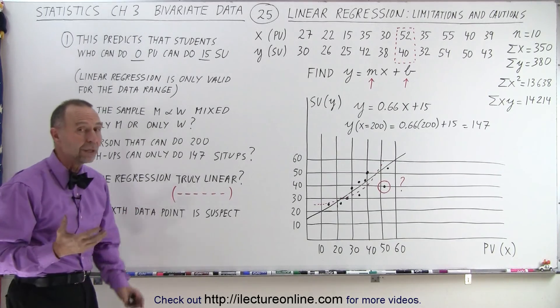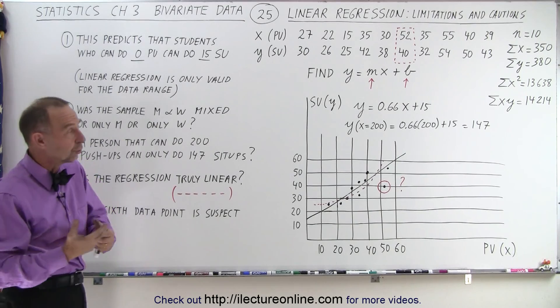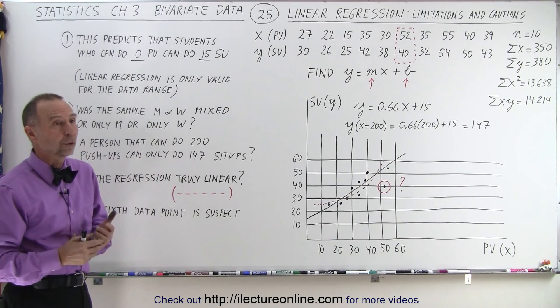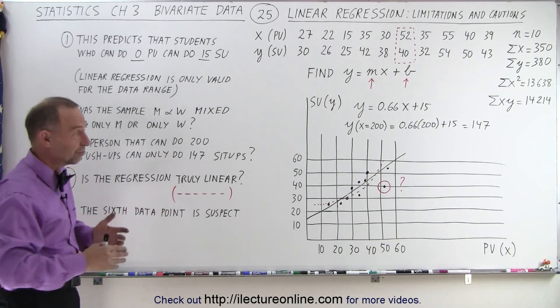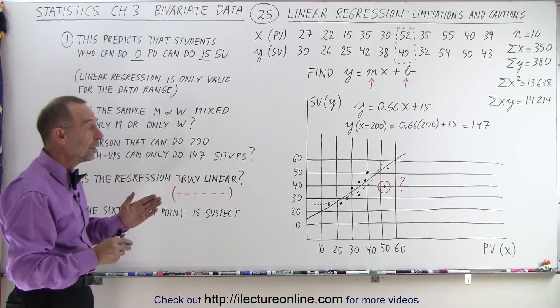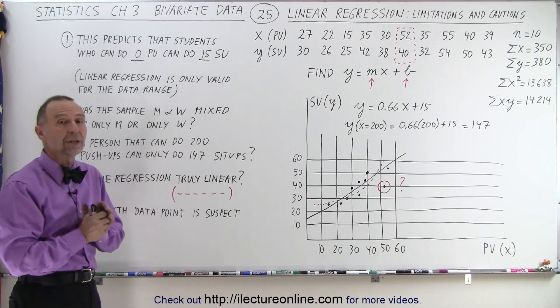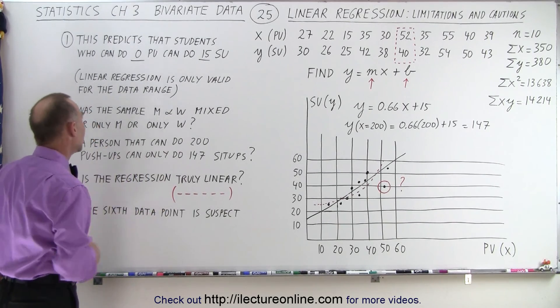Also, we're not really told what the sample represents. It says students, but it didn't say if there were male students or female students. Were there men or women? We don't know. Were there more men, more women, all men, all women, a mix? We don't know. And so, if we have a combination of them, that also may throw out the relationship or throw off the relationship. And so, we should be very careful what actually went into the data.